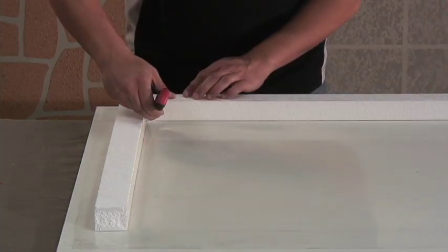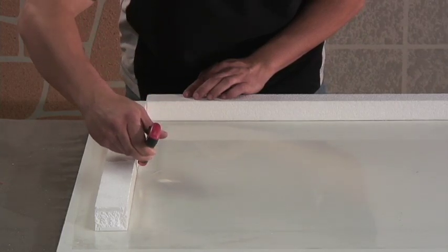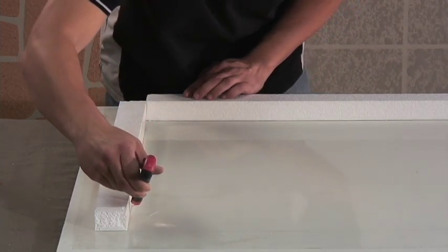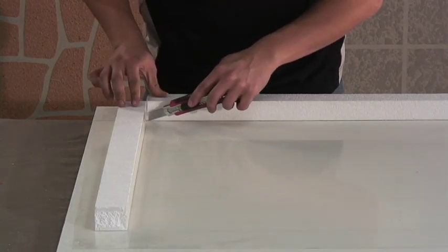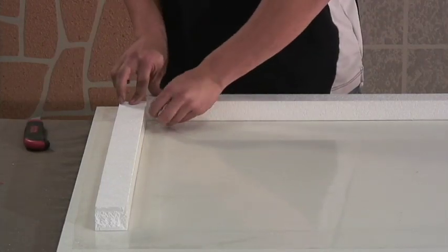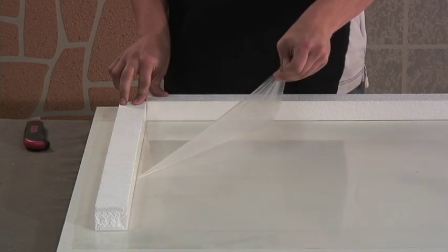Once forming is complete, gently score the top film of your clear base material along the edge of the foam rail. Peel the protective film away to reveal a clean, scratch-free, high-gloss casting surface. You're ready to pour.